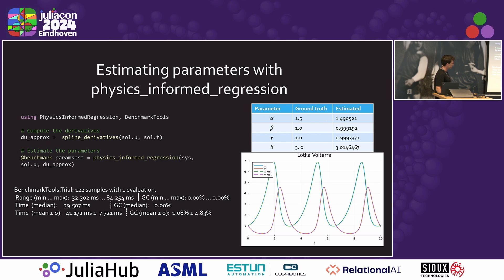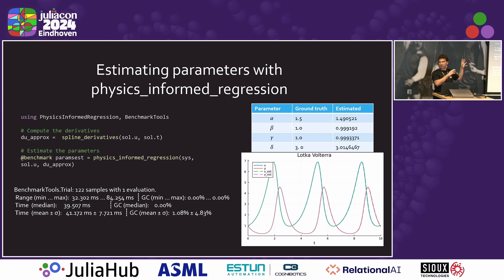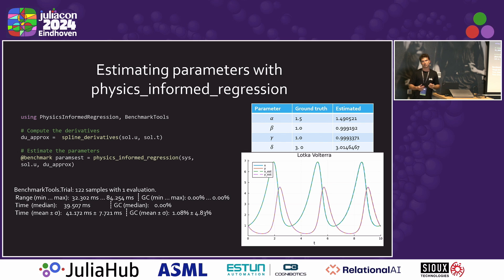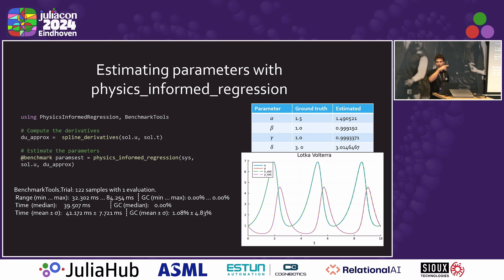The algorithm takes about 30 to 40 milliseconds, so it's super fast. That said, before I make it seem better than it actually is — this is ideal conditions. This only works because you can create a pretty good approximation of the state derivatives. In practice, if you have noisy data, you will need some other strategy to approximate derivatives, like some smoothing strategy.